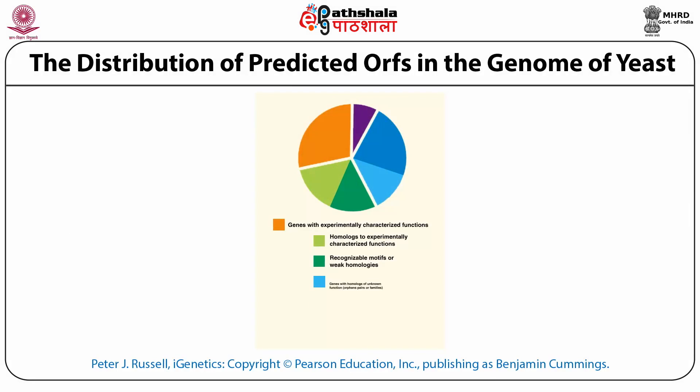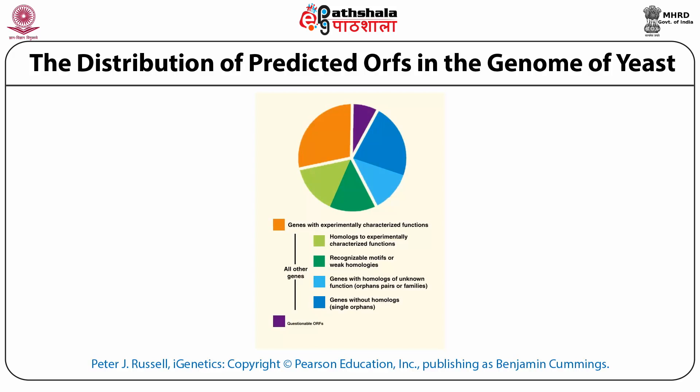You can see here the basic distribution of predicted open reading frames in the yeast genome. In light green are homologues to experimentally characterized functions; in dark green are recognizable motifs or weak homologues; in sky blue are genes with homologues of unknown function — genes that show similarity to proteins of unknown function; and in dark green are genes without any homologues. The orange represents experimentally characterized genes. A certain percent of gene functions are still unknown and need to be predicted using increasing numbers of tools and websites that help predict protein function.